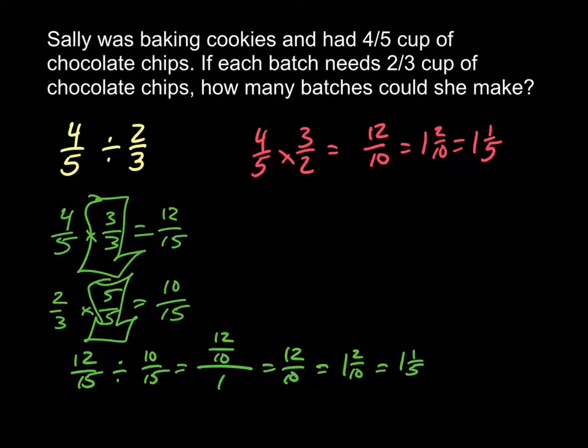If you do it by multiplying the reciprocal, it might look like this, where you have 4 fifths times 3 halves, which 4 times 3 is 12, 5 times 2 is 10, which simplifies to 1 and 2 tenths, which simplifies down even more to 1 and 1 fifth.